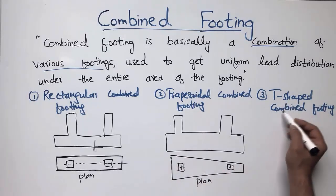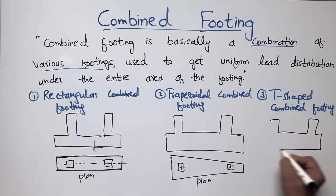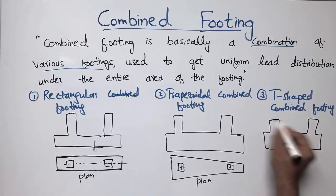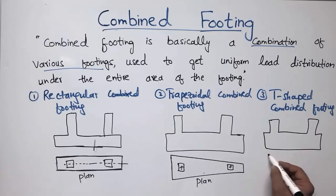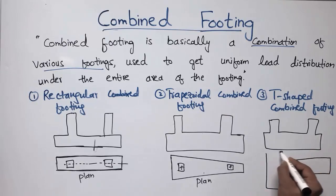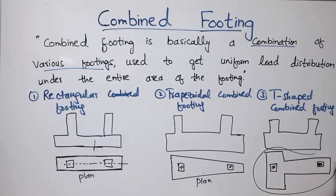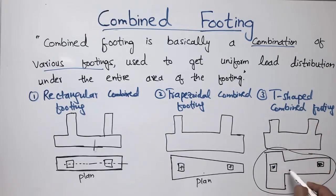The third subtype is the T-shaped combined footing. In this case there is one column and another column, and the shape of the combined footing looks like the letter T. That is why it is called the T-shaped combined footing. But regardless of subtype, the main purpose of the combined footing is to transfer the load as a uniform distribution over the entire area beneath the footing.